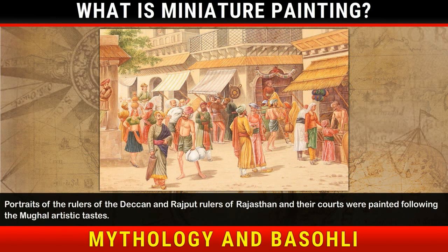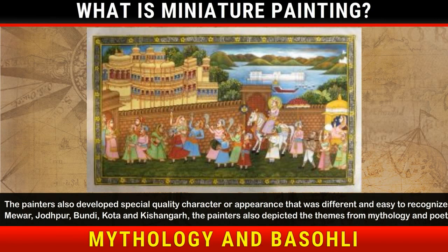The painters also developed a special quality character or appearance that was different and easy to recognise. At Mewar, Jodhpur, Bundi, Kota and Kishangarh, the painters also depicted themes from mythology and poetry.